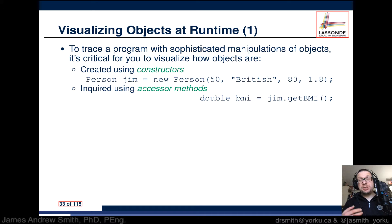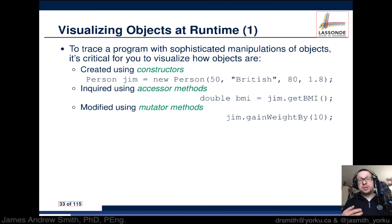Once we've used the constructor to create Jim with these characteristics, we can later access those characteristics using an accessor method. Basically, you take your Jim object, put a dot on it, and call something like getBMI, getWeight, or getHeight. These accessor methods generally start with the word 'get'. The returned value gets assigned to a variable — in this case, a double-precision floating point variable called BMI.